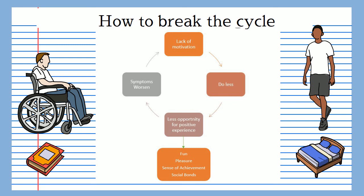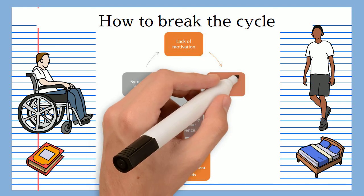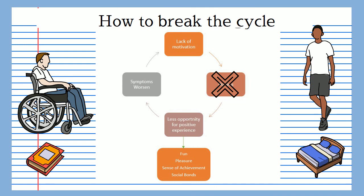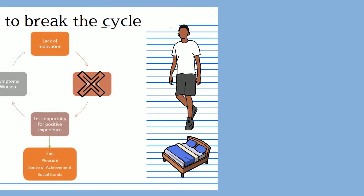Back to the model. The second important part of psychoeducation is for the patient to understand how to break their vicious cycle — this is the rationale for the intervention. Behavioural activation is a behavioural intervention targeting the behaviour of doing less. As we know from CBT, once we break one area of the vicious cycle the whole cycle starts to break down. The rationale is that by supporting the patient to do more, they will have more opportunity to engage with positive experiences like fun and achievement, and it is this that will improve their mood.